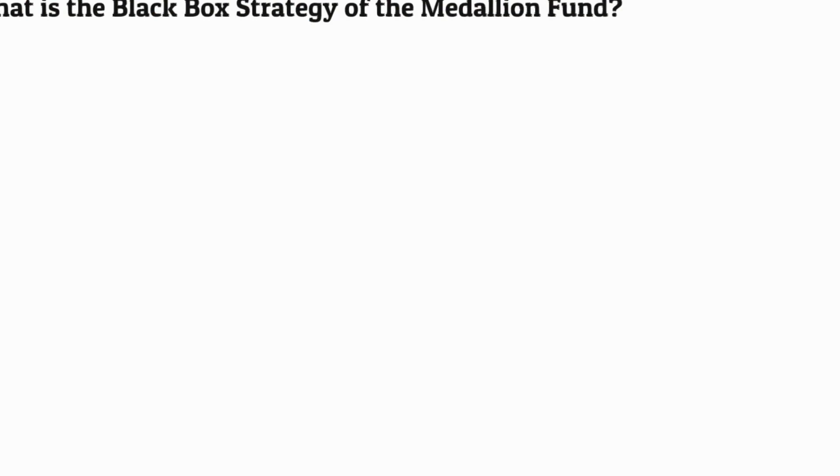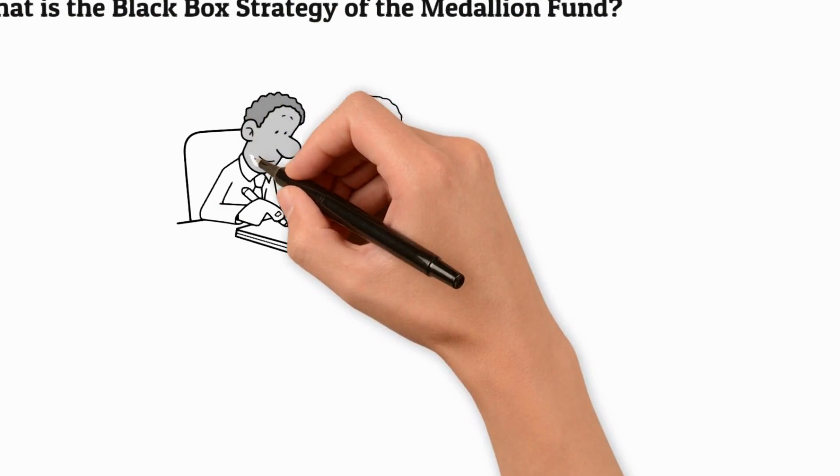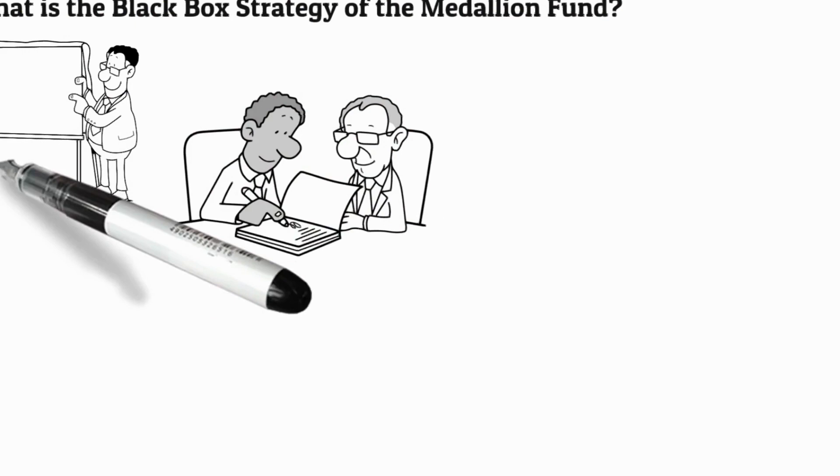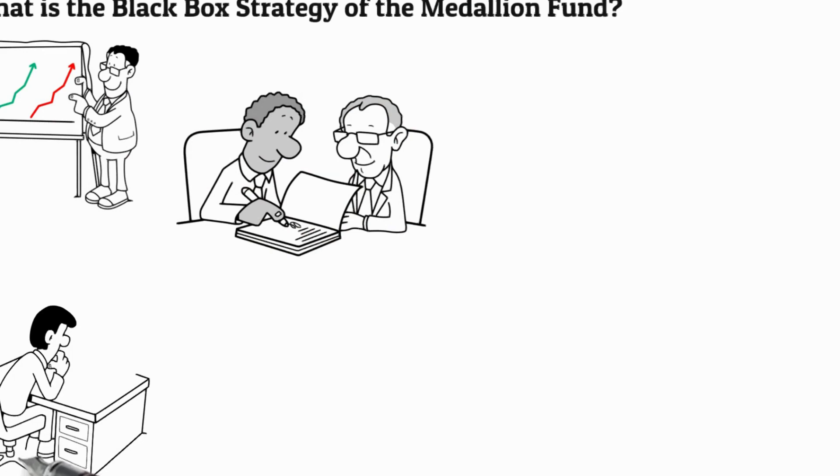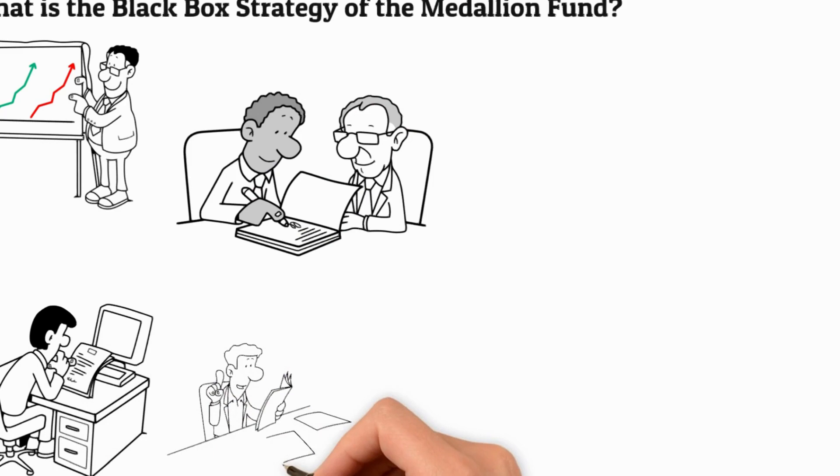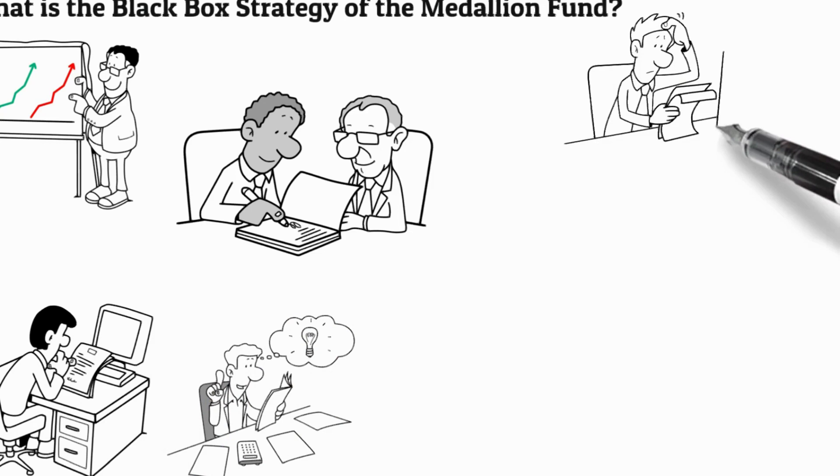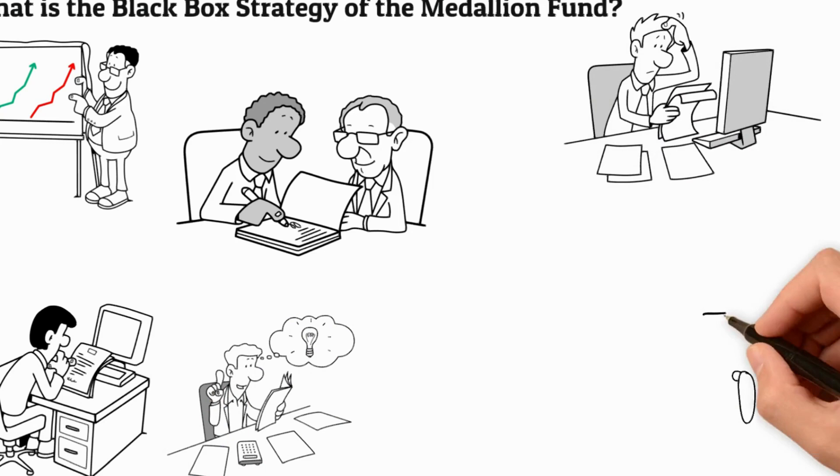What is the Black Box Strategy of the Medallion Fund? The Black Box Strategy of the Medallion Fund is a unique approach to investing that has enabled the fund to outperform the markets for decades. It is based on using mathematics and computer algorithms to identify and capitalize on market anomalies, thereby generating above-average returns. The Black Box Strategy relies heavily on proprietary trading techniques, which are closely guarded secrets amongst Medallion's elite traders. This strategy has enabled the fund to achieve annual returns of over 30% since its inception in 1988.